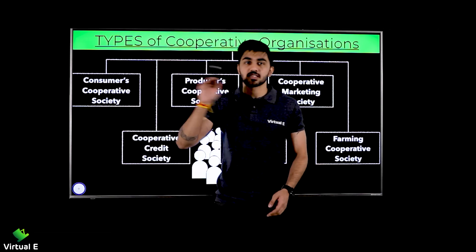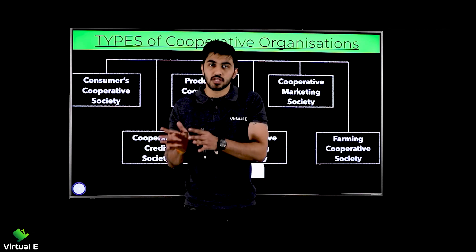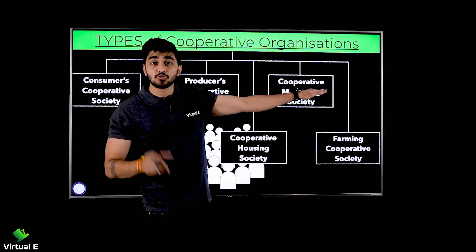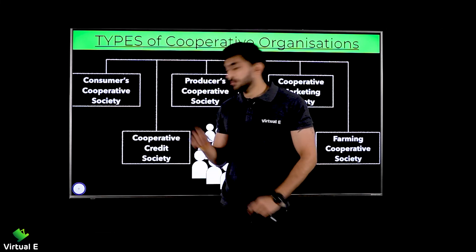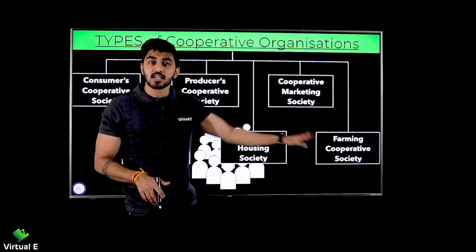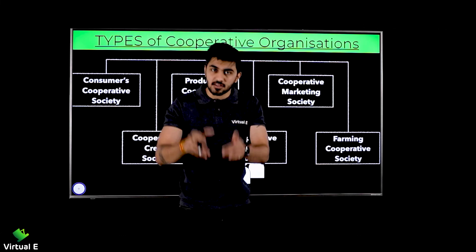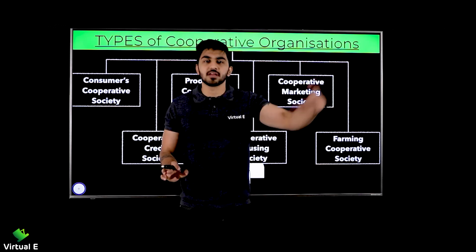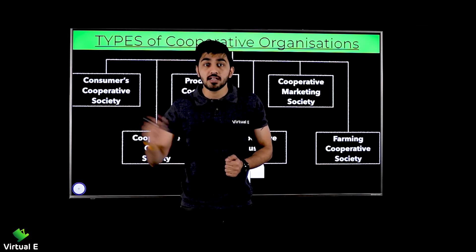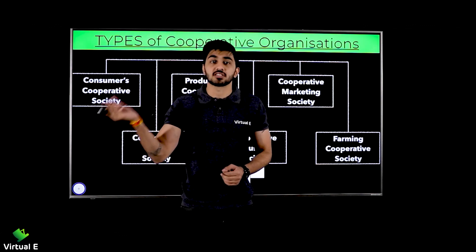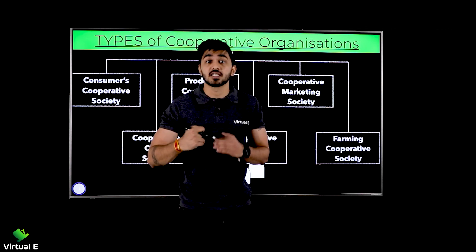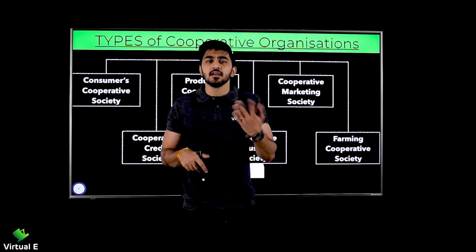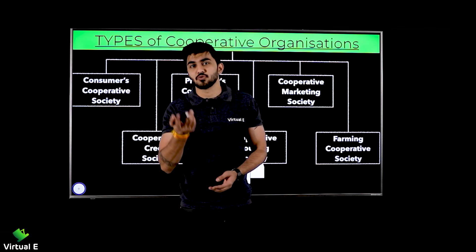If you look at all 6 types of cooperative societies, their base is the same. One type of people come together — all consumers, all producers, all who need credit, all who need housing, all farmers. When one type of people come together, they pool money, eliminate the middleman, and ensure they get goods and services at good rates, get loans, get houses, and get good rates for their output. The base is the same across all six. We have covered all six types — review them again, and we will take them up in the next video.